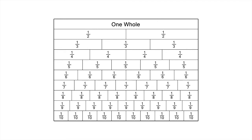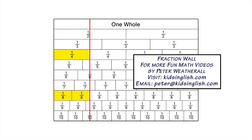Let's summarise what we've found. One quarter and two eighths are equivalent fractions. One way to check for equivalent fractions is to see which fractions line up with one quarter when you draw a vertical line from the end of one quarter down the fraction wall. The end of two eighths lines up nicely with one quarter.